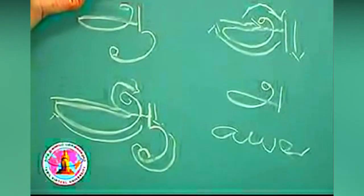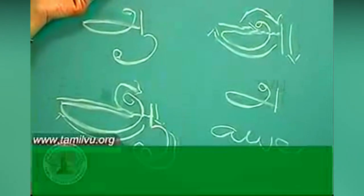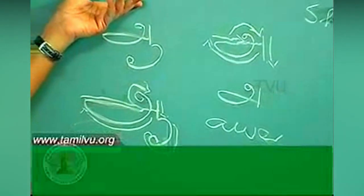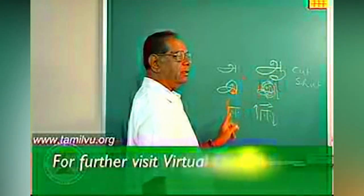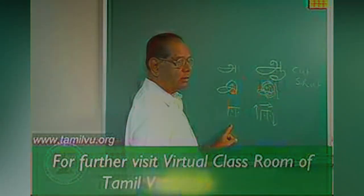Now we have seen 'அ', 'ஆ', 'இ', and 'ஈ'. We go further.